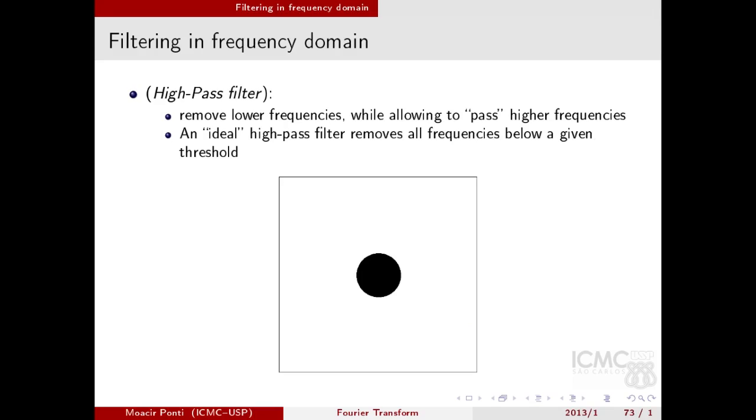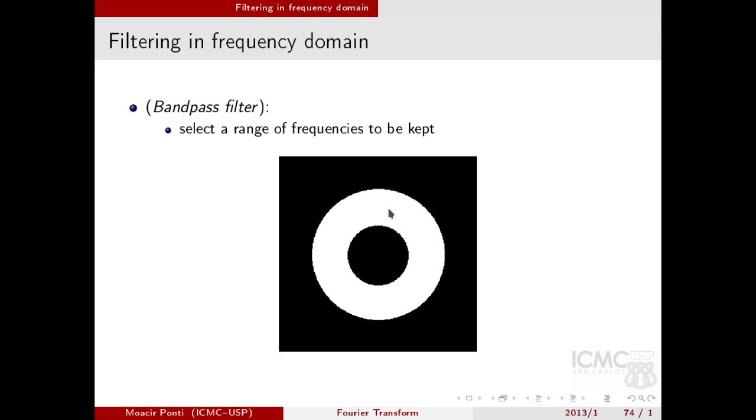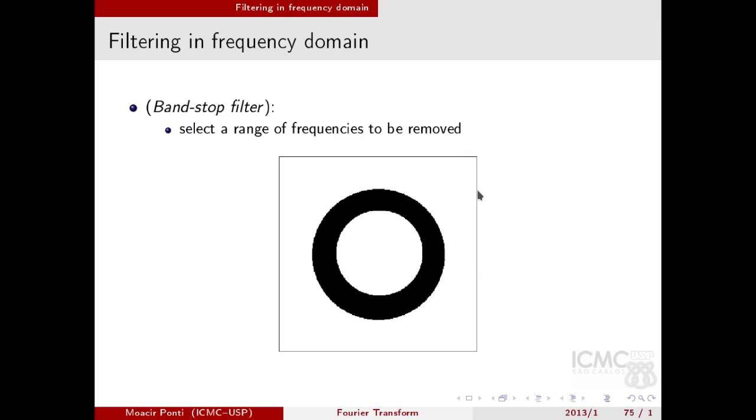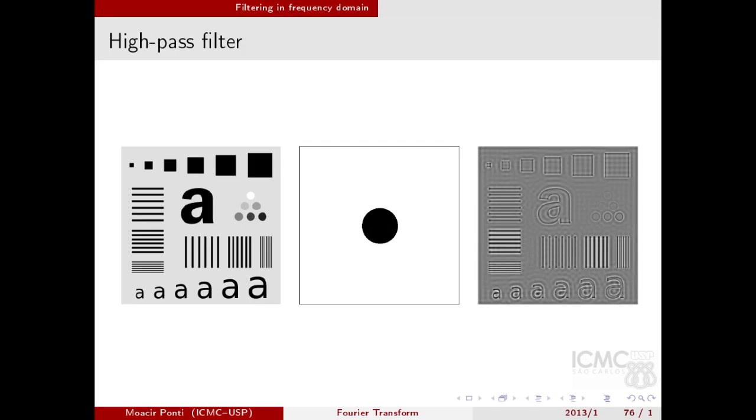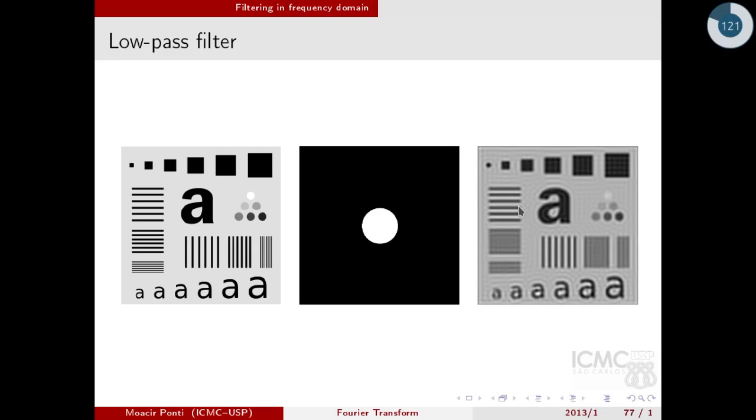The high-pass filter works similarly, but it is the complement of the low-pass filter. It removes lower frequencies while allowing to pass higher frequencies. I can also have a band-pass filter, which selects a range of frequencies to be kept while removing the other frequencies that are not within this range. And a band-stop filter, which selects a range of frequencies to be removed. We show an example of a high-pass filter. You can see that by removing the lower frequencies, I lost all the information related to flat regions, and I retain only those information related to the transitions between intensities. In the case of the low-pass filter, it is the other way around, so I lose information about the transitions, so it gives me a blurred version of the image, while retaining the information of the flat regions, including the color.